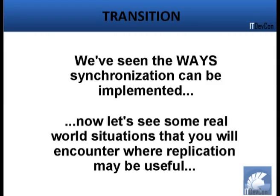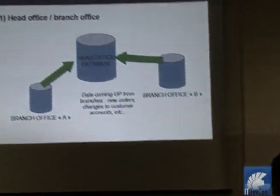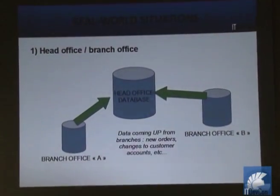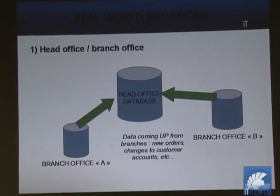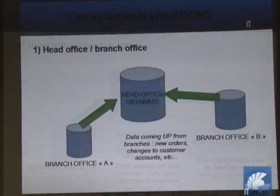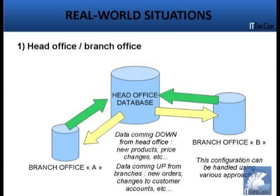The first real-world scenario is the head office / branch office model. You have one head office database and two branch office databases. Data coming down from head office includes new products and updated price lists pushed to branches so they can sell. Data going back up includes new orders placed from within the branch that need to be merged into the global company sales list, along with changes to customer accounts. This is a typical situation where you want replication.